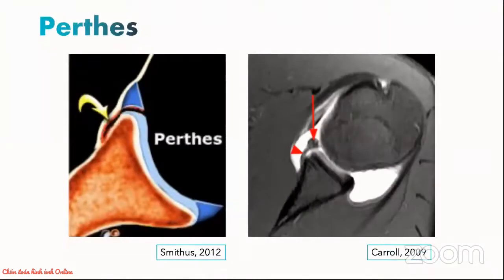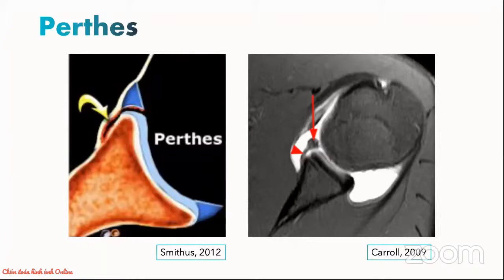When the labrum is separated from the underlying cartilage but still remains partially attached to the glenoid rim by an intact periosteal sleeve, we are looking at a Perthes lesion. Because the periosteal sleeve is still intact, the inferior glenohumeral ligament loses its function and the shoulder becomes unstable. The axial image on the right demonstrates this: the arrow points towards the slightly disrupted inferior labrum, while the arrowhead shows the intact periosteal sleeve. Perthes lesion can result from either dislocation or cumulative stresses on the inferior glenohumeral ligament owing to physical overuse and repetitive trauma.